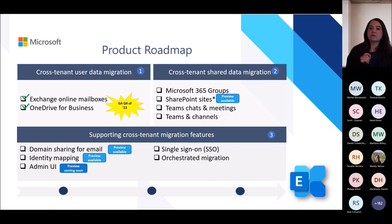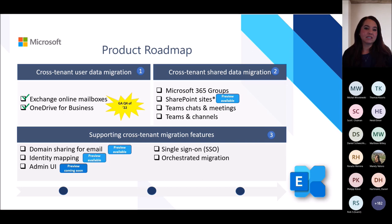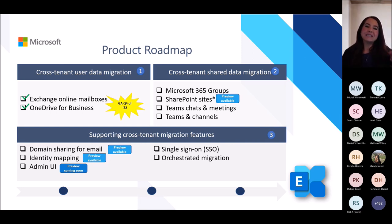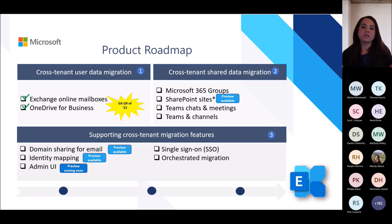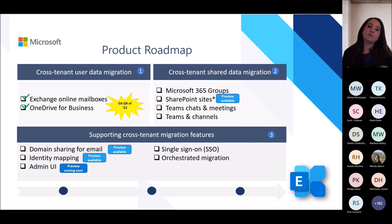We're also investing in a solution to allow tenant admins to configure Azure B2B for end users to enable access to resources in both source and target tenants when a longer migration or transition is required. Our end-state goal is to support an orchestrated migration of Exchange Online, OneDrive, SharePoint sites, Groups, Teams, and chats — our entire suite. Until then, you'll see previews of each individual experience. A big thank you to those who have participated in our active previews — the feedback has been invaluable.